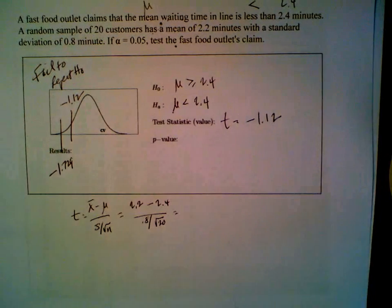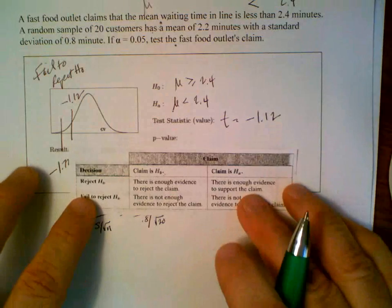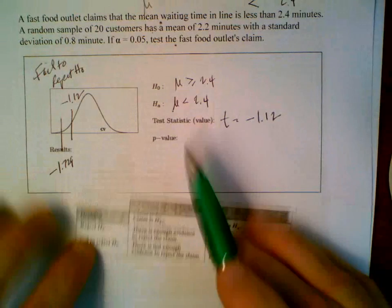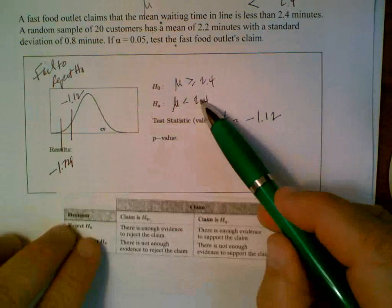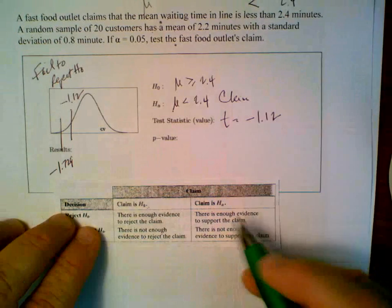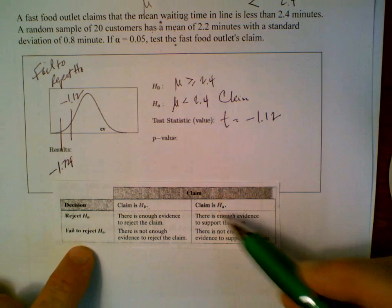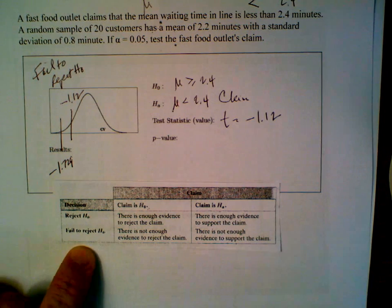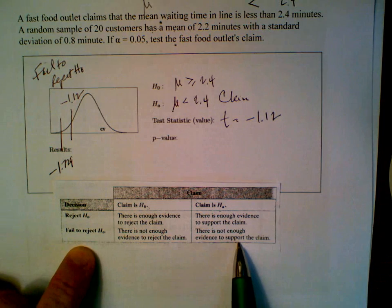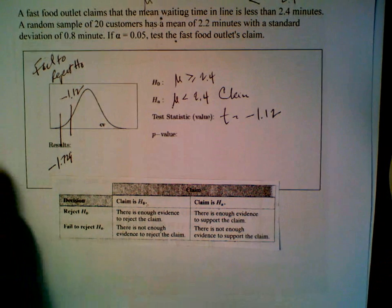Results. In terms of the original claim, we've got our handy little guide here. The claim was the alternate hypothesis, and we failed to reject. Therefore, there is not enough evidence to support the claim that the mean waiting time is less than 2.4 minutes.